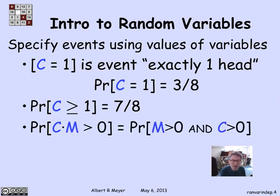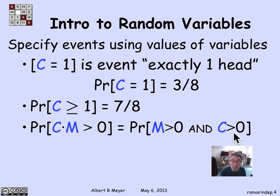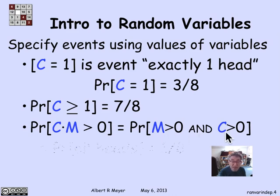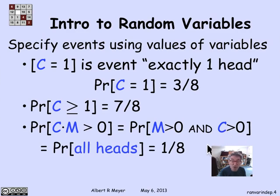Here's a more interesting one: we can use both variables c and m to define an event. What's the probability that c times m is greater than 0? Since c and m are both non-negative, this equals the probability that each is greater than 0. c greater than 0 means at least one head, and m greater than 0 means all coins match. This is an obscure way of describing the event 'all heads,' which has probability 1/8.